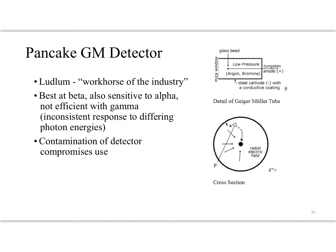I want to talk about the pancake GM detector — a gas-filled detector. It's often filled with argon gas or bromine, and the radiation passes through the gas, ionizes it, and then the electrons are drawn towards a positively charged anode. Each electron that strikes the anode is read out. This sounds similar to how an x-ray tube works — it has an anode that attracts electrons — but in this case, instead of creating x-rays, this is detecting them. The anode is just used for readout and is also made out of tungsten, interestingly enough.